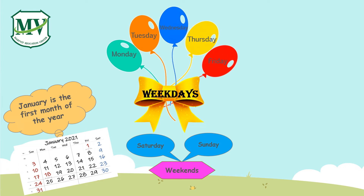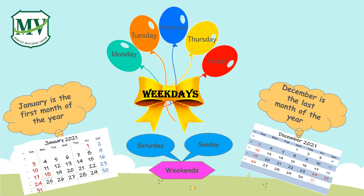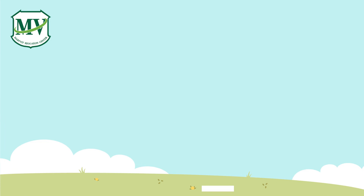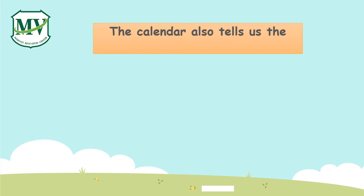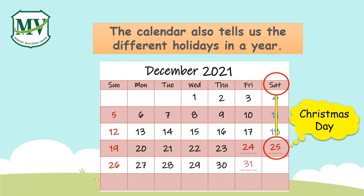The first month of the year is January, and December is the last month of the year. The calendar also tells us the different holidays in a year. For example, on the month of December, we celebrate Christmas Day on the 25th of the month, and this year it falls on Saturday.